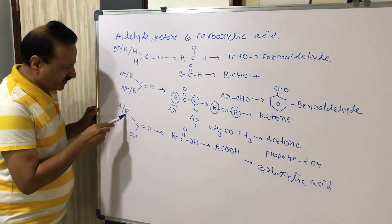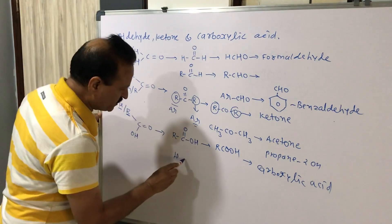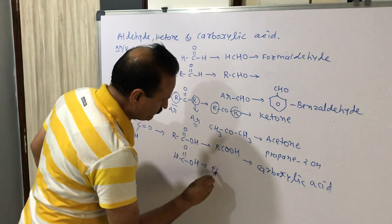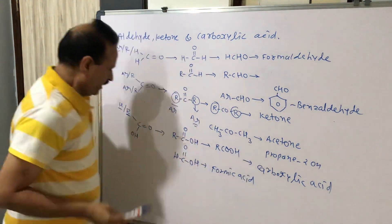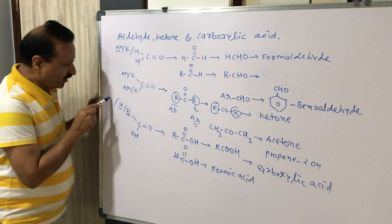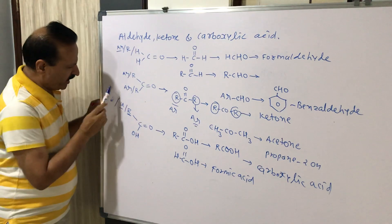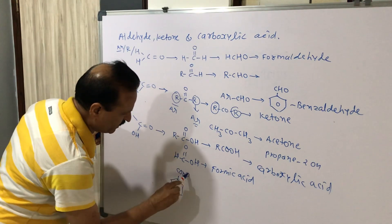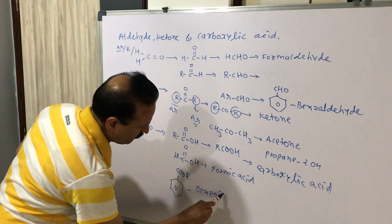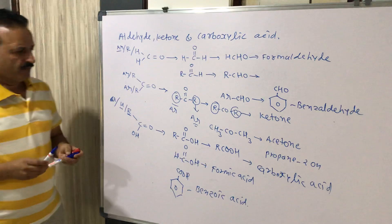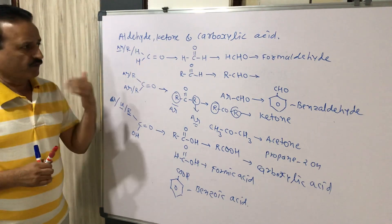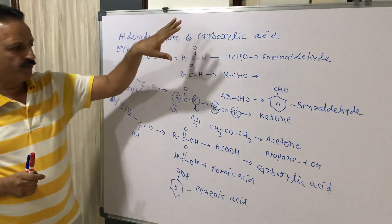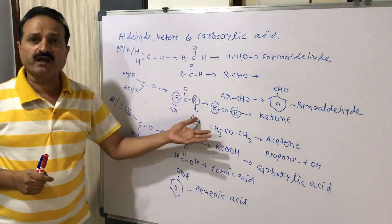If instead of R we take H, then we have H-C(=O)-OH, which is Formic Acid. If instead of R or H we take Ar (a Benzene ring), then Ar-COOH is Benzoic Acid. So from the Carbonyl group we can form Aldehyde, Ketone, and Carboxylic Acid.